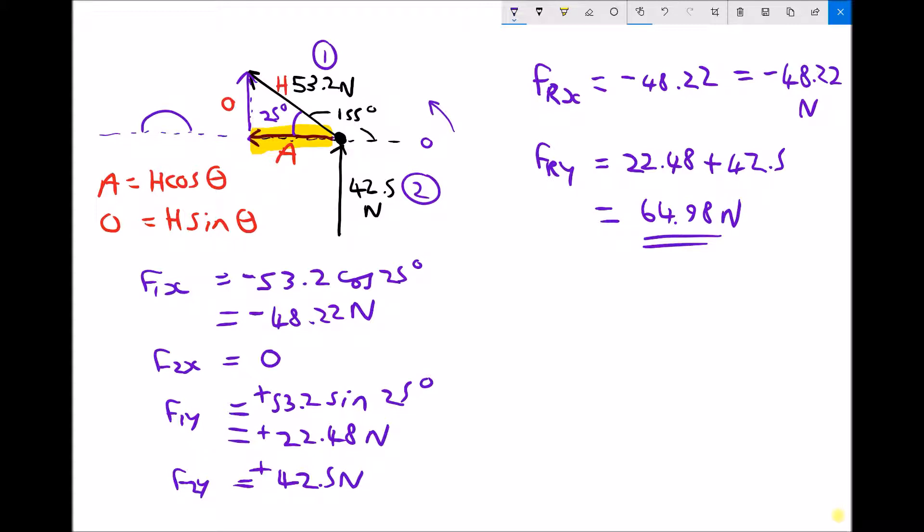So our next step is to construct the triangle for the resultant using those values of positive y component of 64.98 Newtons and a negative x component of 48.22. So let's draw this out. We've got negative 48.22. Because it's negative, that force goes from right to left. And the y component is positive, 64.98 is positive, so it goes upwards. 64.98. And the resultant joins the start to the end. That's what we're trying to find, that resultant R. And we're also going to try to find the bearing, which is that angle theta there.